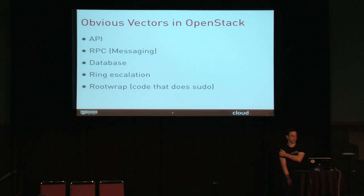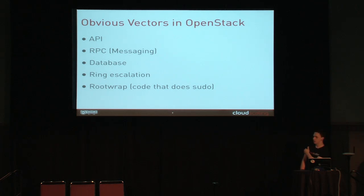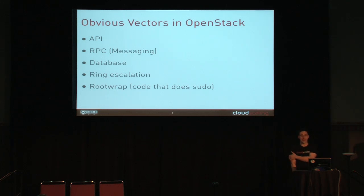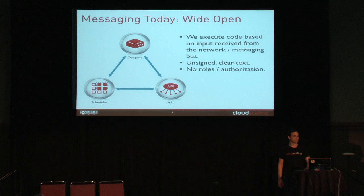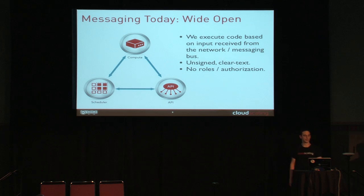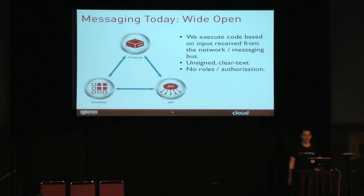We have obvious vectors. Users are going to be able to get in via the API, which is very public facing. RPC is pretty bad. Database is pretty bad. We have potential for ring escalation, and root wrap is a pretty nasty vector as well because it does sudo — we do a bunch of stuff as root. Messaging is such that everything communicates to everything with no restrictions, and we execute code based on input received from the network, from the database and the messaging bus. This is unsigned and clear text, with no roles or authorization done on any of this.